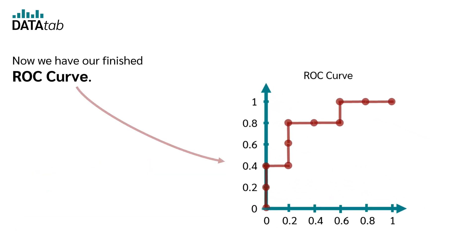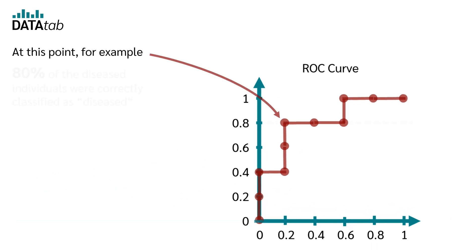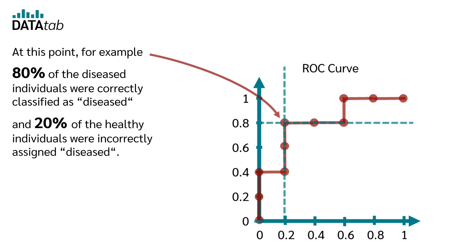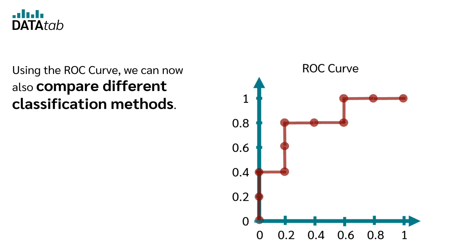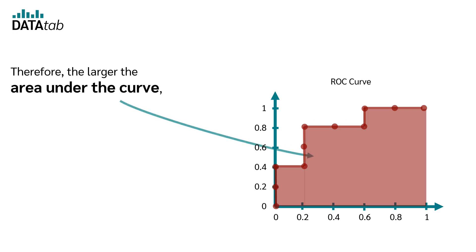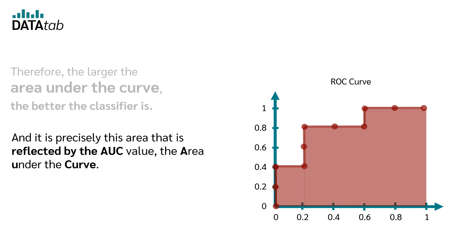Now we have our finished ROC curve. At this point, for example, 80% of the diseased individuals were correctly classified as diseased and 20% of the healthy individuals were incorrectly assigned as diseased. Using the ROC curve, we can also compare different classification methods. A classification model is better the higher the curve is. Therefore, the larger the area under the curve, the better the classifier is, and it is precisely this area that is reflected by the AUC value — the area under the curve.